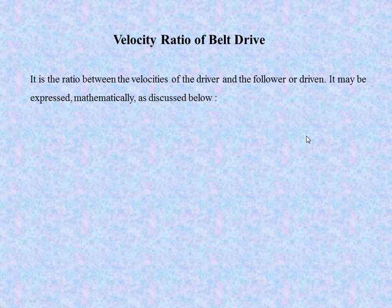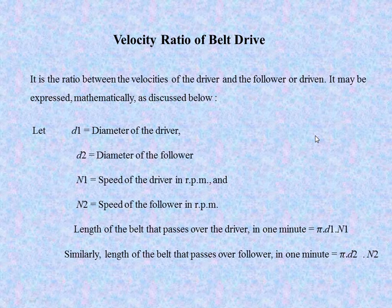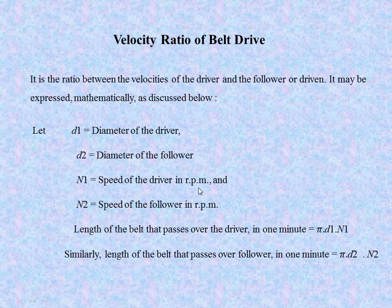Next is the velocity ratio of the belt drive. It is the ratio between the velocities of the driver and the follower or driven pulley, and may be expressed mathematically as follows. D1 is the diameter of the driver, D2 is the diameter of the follower, N1 is the speed of the driver in RPM, and N2 is the speed of the follower in RPM.